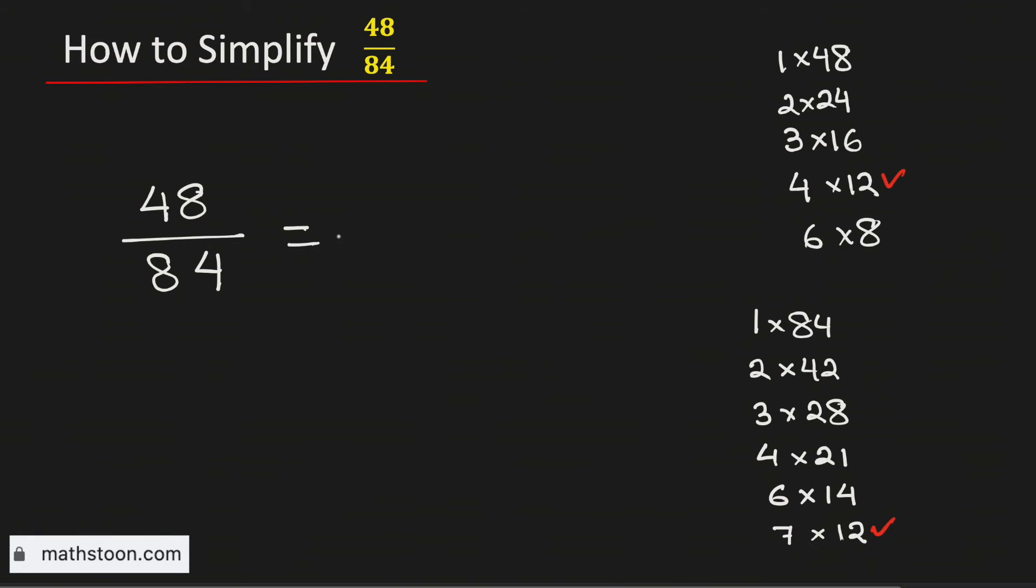So to simplify this fraction, we will divide both the numbers 48 and 84 by their greatest common factor, which is 12. And if we divide them by 12, we will get 4 over 7.